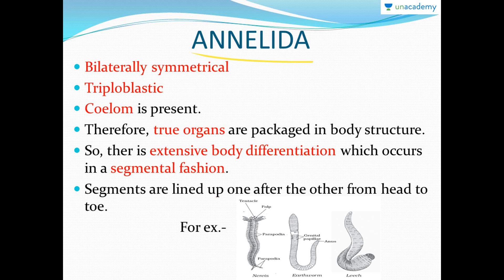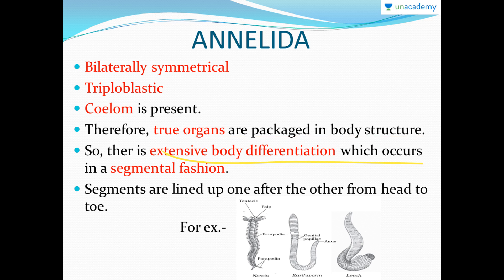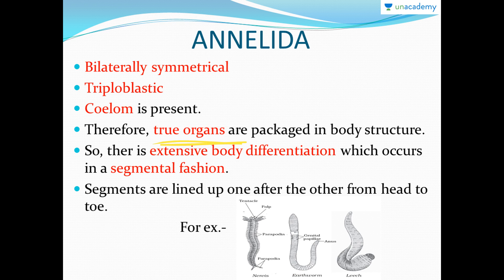Annelida are also bilaterally symmetrical and triploblastic. They have a true coelom, so true organs are present packaged within the body structure. There is extensive body differentiation occurring in a segmental fashion — as you can see in the earthworm, the body has many segments lined up one after the other from head to tail. This segmented organization marks a significant advance in body differentiation.